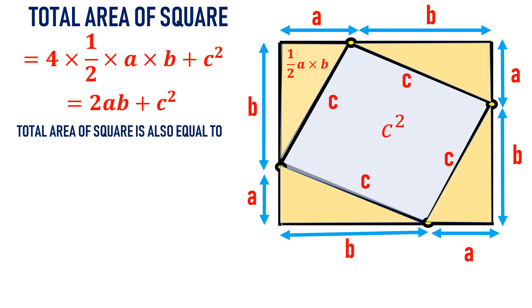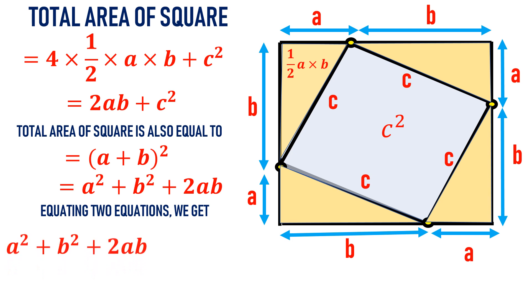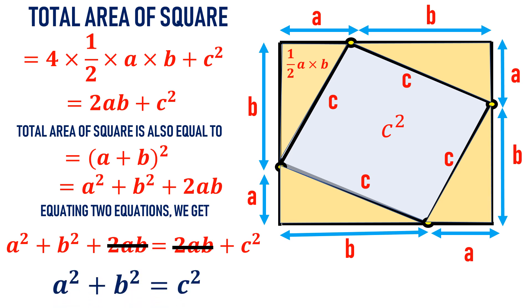The total area of the bigger square is also equal to (a + b)², since the side of the bigger square is a plus b. We know (a + b)² = a² + b² + 2ab. Equating both expressions: a² + b² + 2ab = 2ab + c². Canceling 2ab from both sides gives a² + b² = c², which is the Pythagorean theorem.